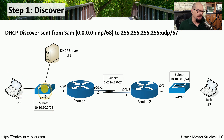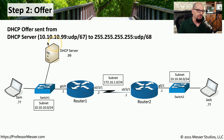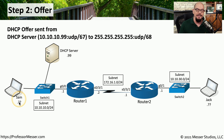Because the Discover is a broadcast, it is sent to all devices on the network. A router without DHCP services would simply ignore that broadcast, but the broadcast does make it to the DHCP server on the local network. Now that the DHCP server has seen the Discover message from Sam, it sends a DHCP Offer message from its local IP address, 10.10.10.99, using UDP port 67, to a destination address of 255.255.255.255, because Sam doesn't have an IP address yet. That all-ones broadcast is sent to UDP port 68, and Sam is listening to see if any of these broadcast messages are received.